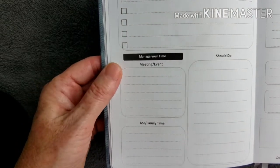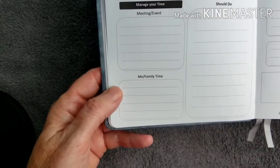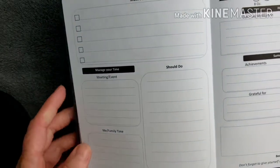Manage your time section, meeting events. And I like this. You can put in your self-care, your me time, your family time right there. And then your should-do tasks.